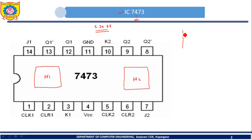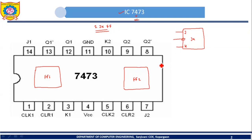A block diagram of JK flip-flop is somewhat like this. In JK flip-flop we have two inputs J and K. These two inputs are called synchronous inputs because their operation is dependent on the clock. JK flip-flop also has a preset input and a clear input, and two outputs: Q and Q-bar.